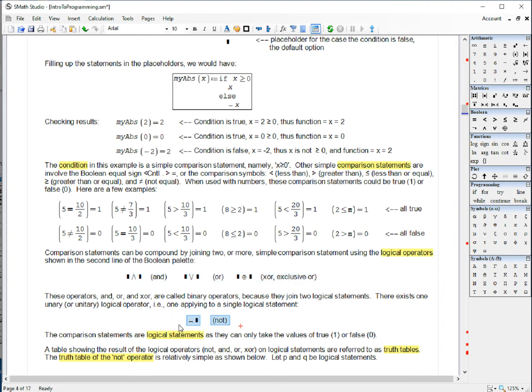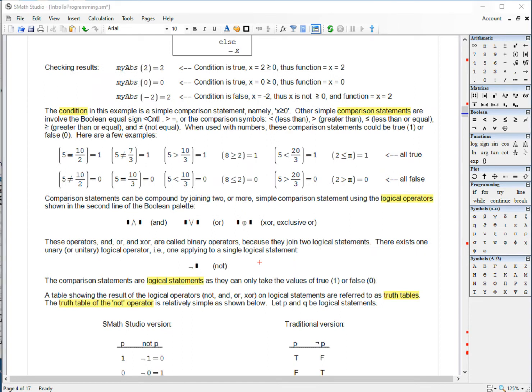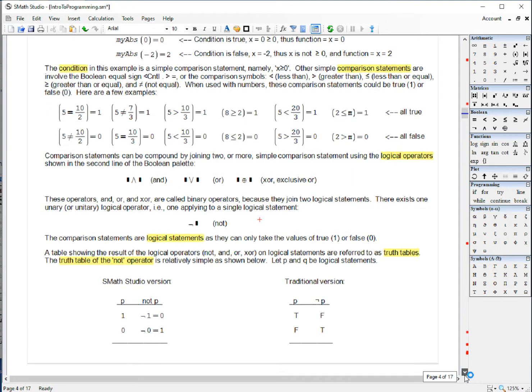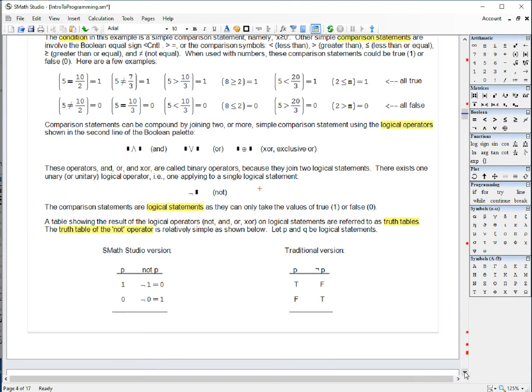And this is the case for where they're called binary operators because they need two logical operations to form a result. Whereas the NOT, the negation, is a unary operator because it only needs one logical statement.